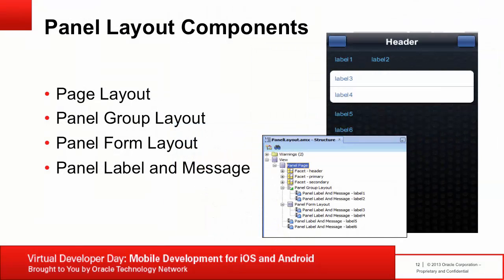The panel group layout is a basic layout component that lays out its children horizontally or vertically. The panel form layout positions components so that their labels and fields align horizontally. The main content of a panel form layout is typically comprised of input components such as input text, and selection components such as choice. Use the panel label and message component to place a component without a label attribute inside a panel form layout — these are usually input/output text, buttons, or links.